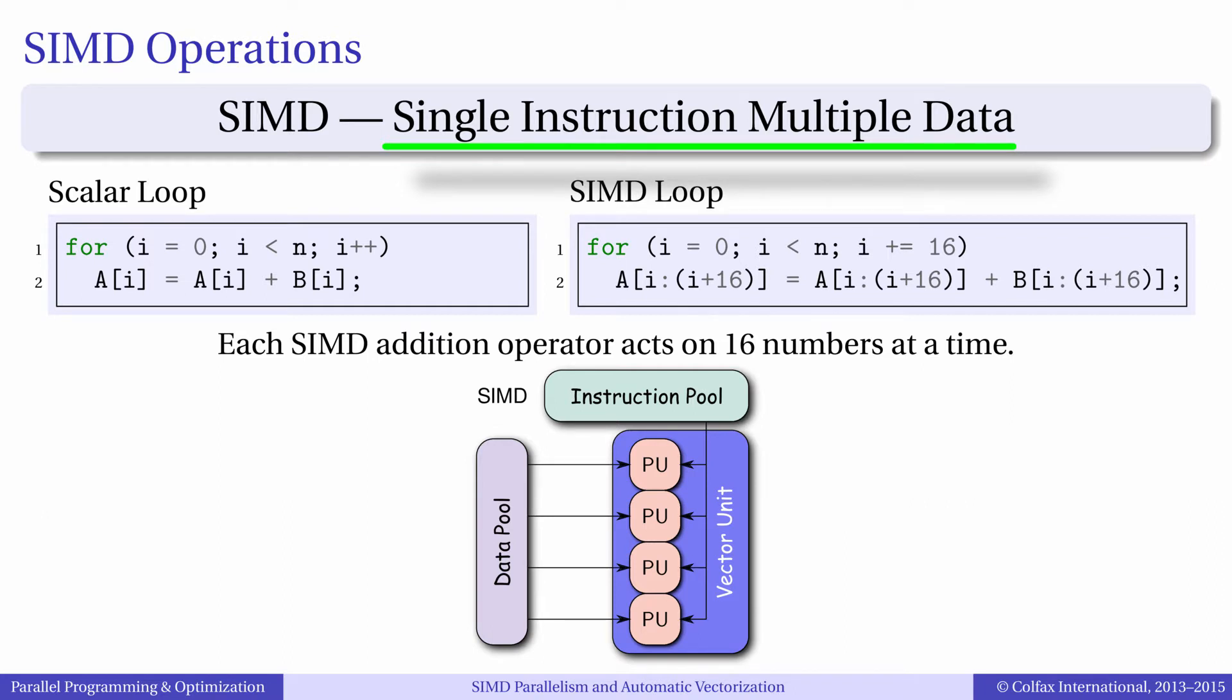This diagram illustrates two programs with data parallelism. On the left we have a scalar loop with n iterations which adds each element of array B to the respective element of array A. On the right is a vector loop. This pseudocode has the number of iterations equal to n divided by 16. In each iteration, 16 consecutive elements of B are added to 16 elements of A.